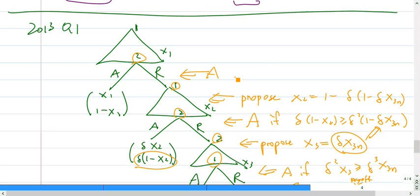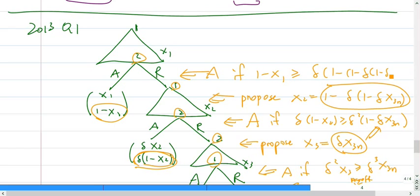Moving back up. Player 2 is accepting or rejecting. I should accept if 1 minus x1 is larger than or equal to delta 1 minus x2. But x2 we solved already, so we have this thing, 1 minus delta. So propose x1 equal to 1 minus that. We should simplify this. This cancels out so this becomes delta squared. Let's move it outside, so plus delta to the power of x3n.